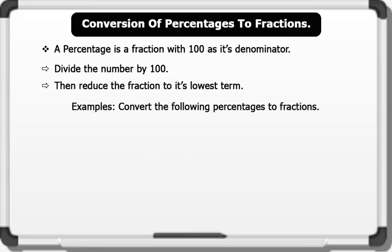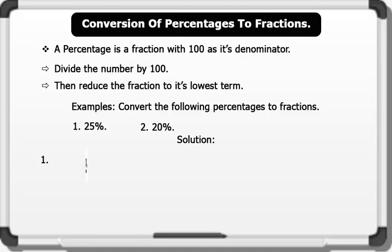Let's see some examples. Convert the following percentages to fractions. For 25%: dividing by 100 gives 25 over 100; to reduce to the lowest term, we divide through by 25, which gives us 1 over 4.